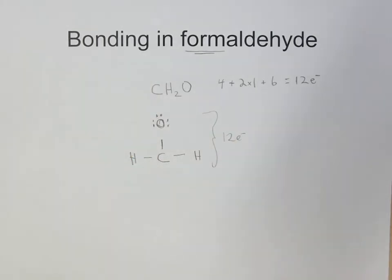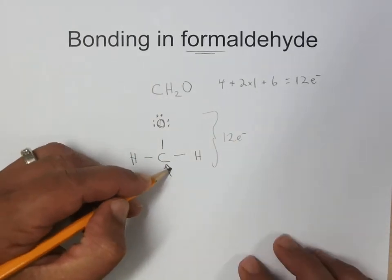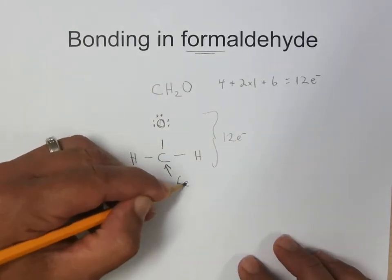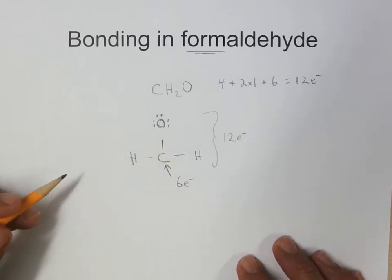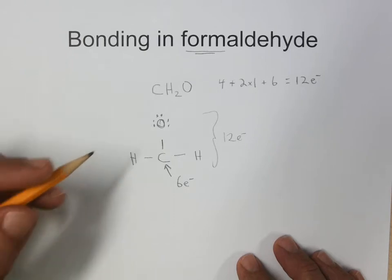And we can't add in any electrons, but the carbon here has still only got six electrons in its environment, the three bonds. So in order for the carbon to fill the octet rule,